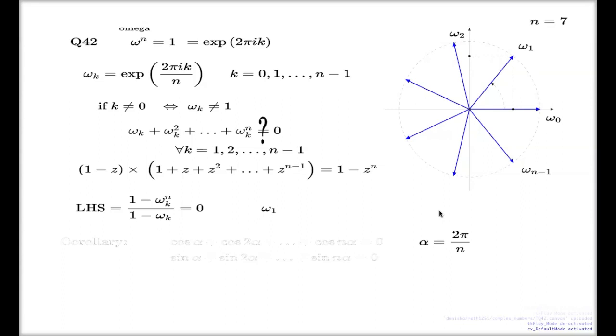The real part of omega_1, first non-trivial root of unity, this real part is simply the cosine of this angle.